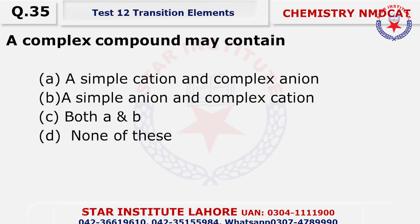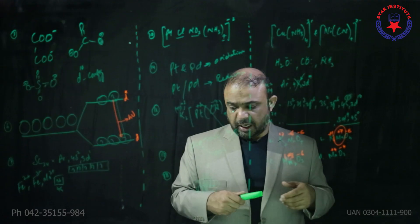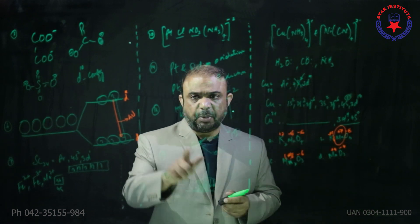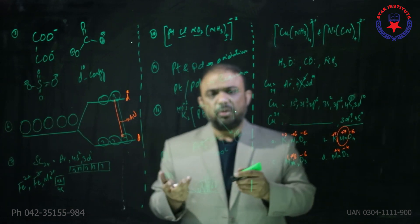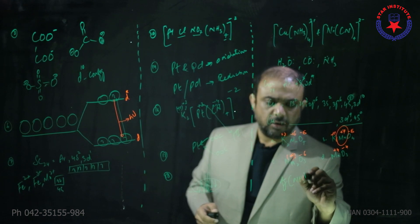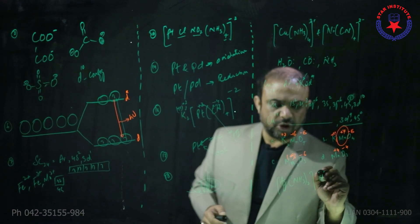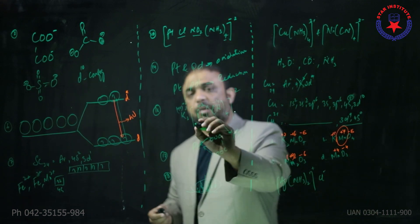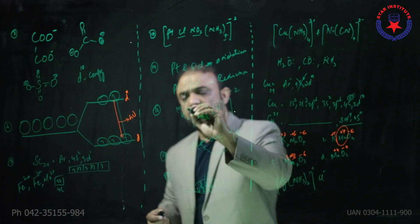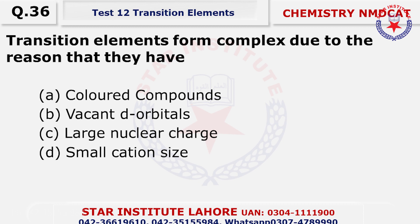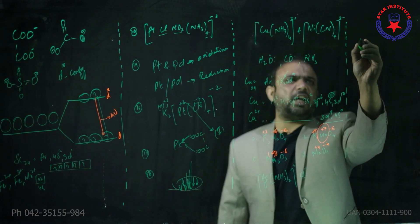Question thirty-five: a complex compound may contain a simple anion and a complex ion, or a simple cation and a complex ion. The example of simple cation and complex ion is [Ag(NH3)2]Cl — here the complex cation is [Ag(NH3)2]+ and the simple ion is Cl-. Both arrangements are possible. Question thirty-six: transition elements form complexes due to the reason that they have vacant orbitals — taking scandium, atomic number 21, configuration argon, 4s2, 3d1 — the vacant orbitals allow complex formation.